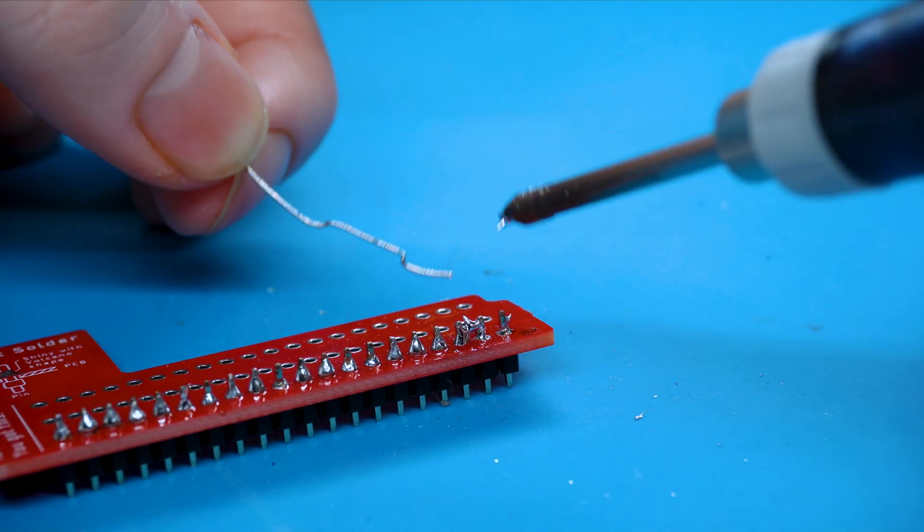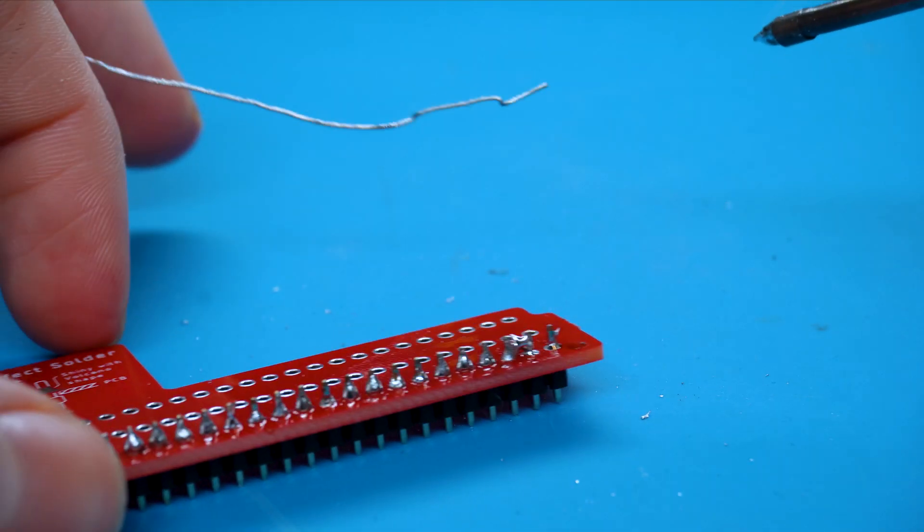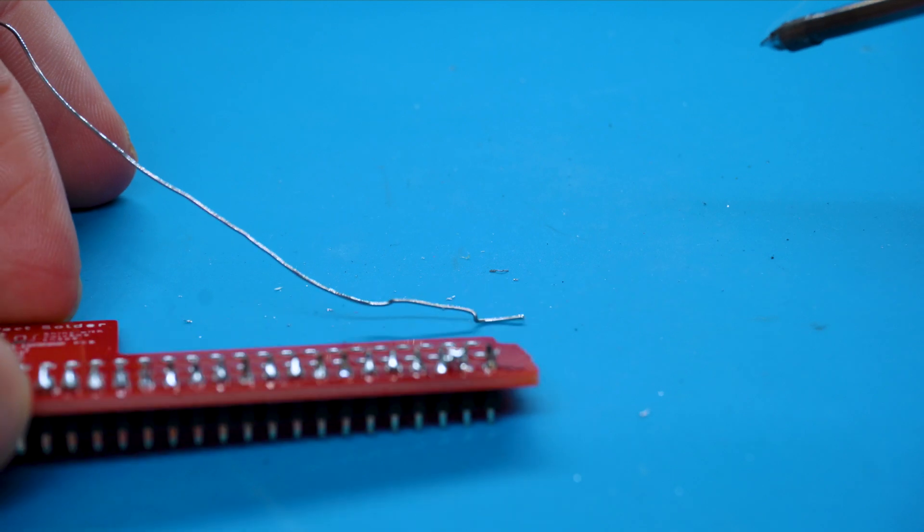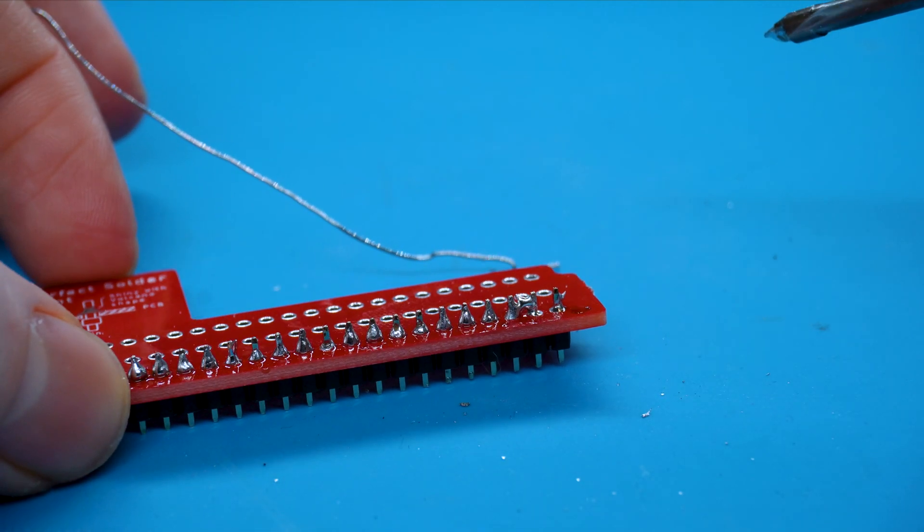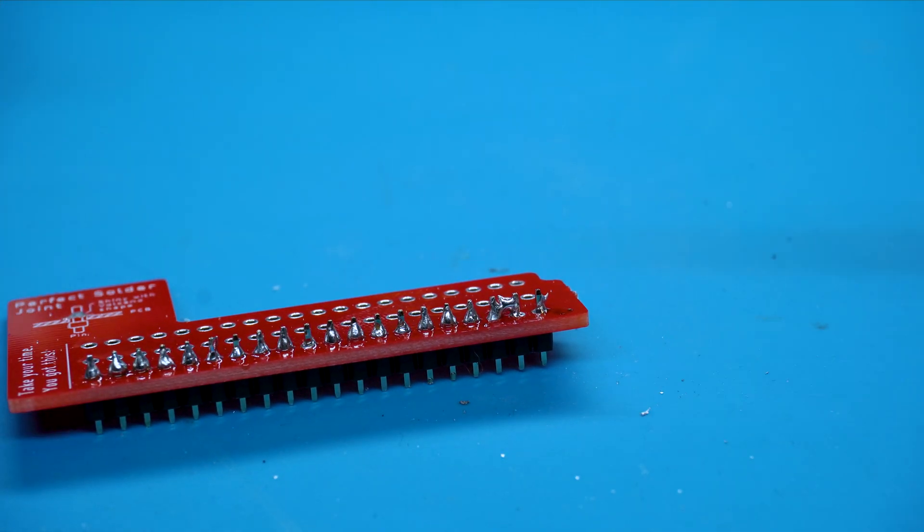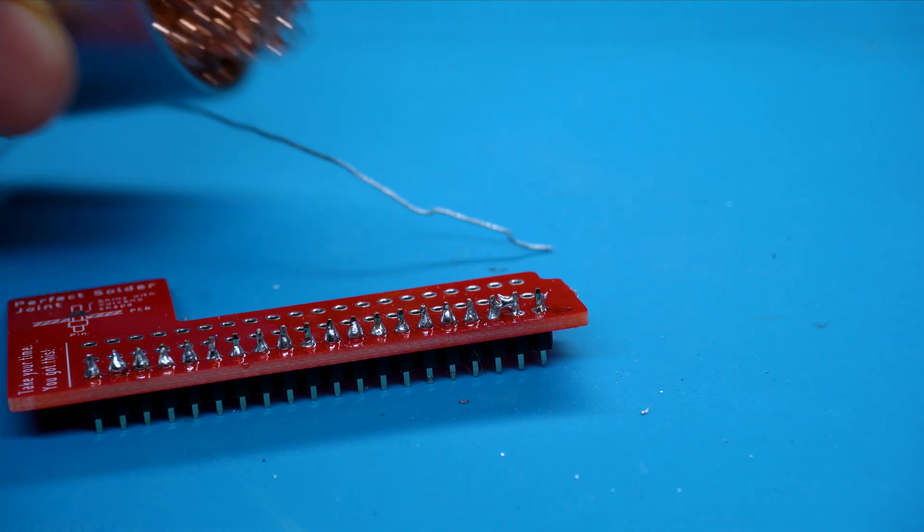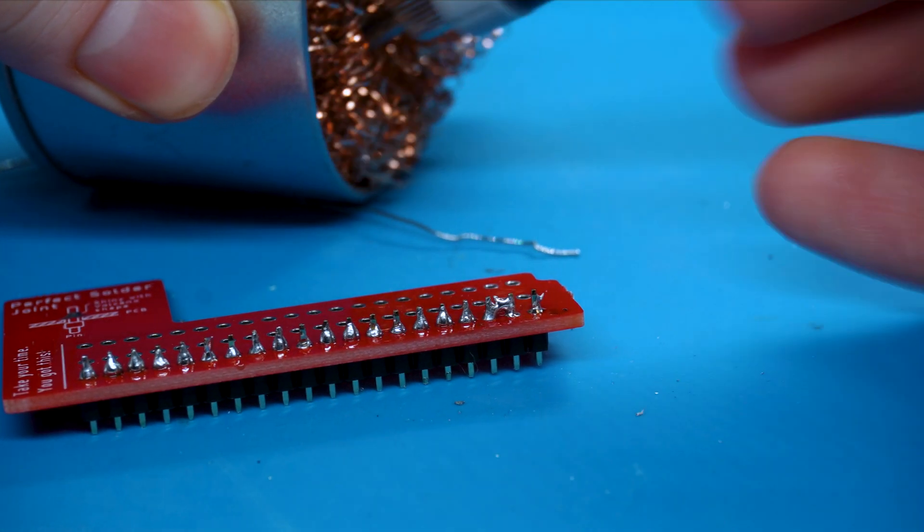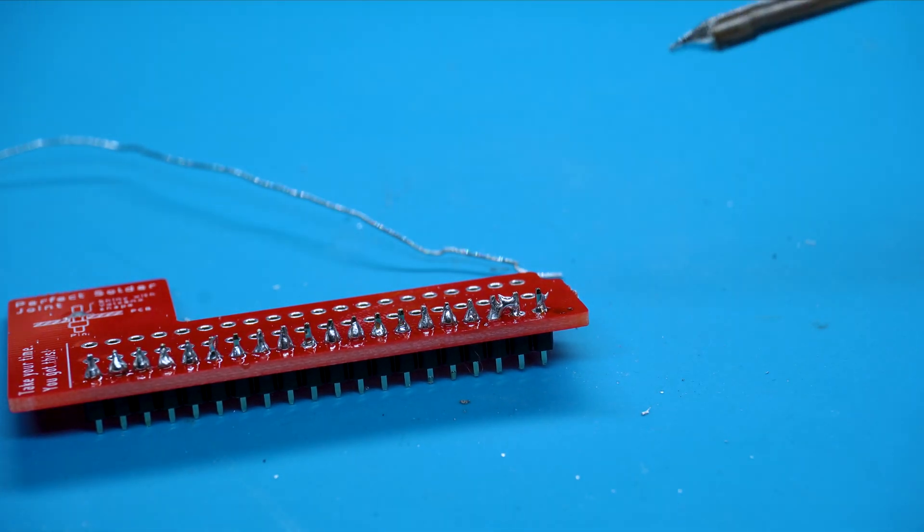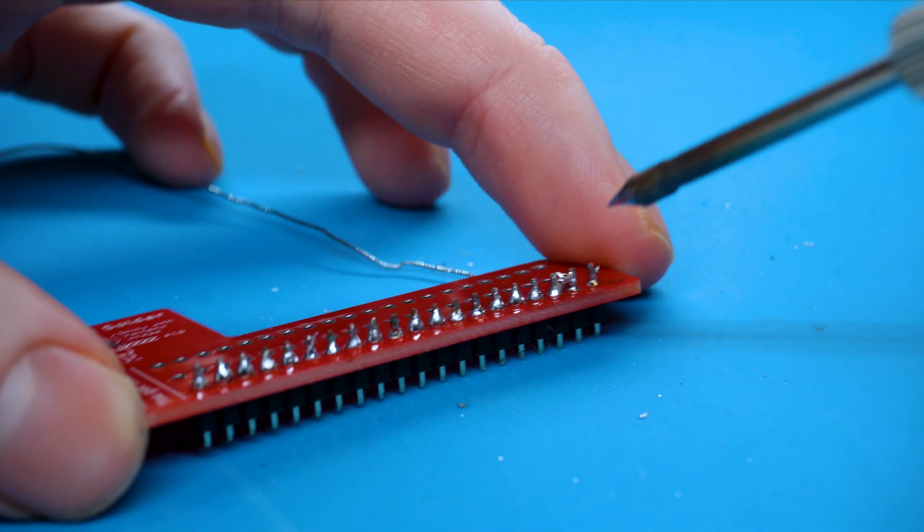The first solder mistake I'm going to show you is what's called bridging. Here you can see the two pins are accidentally connected via solder. The way to solve this issue is to firstly clean the soldering iron tip. You can do this through wet foam or what I use, brass mesh.